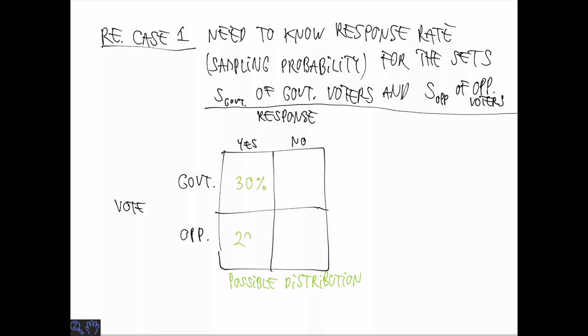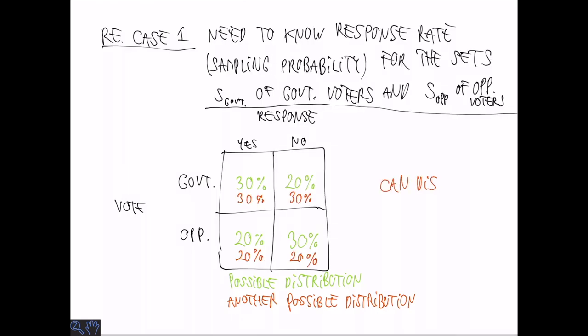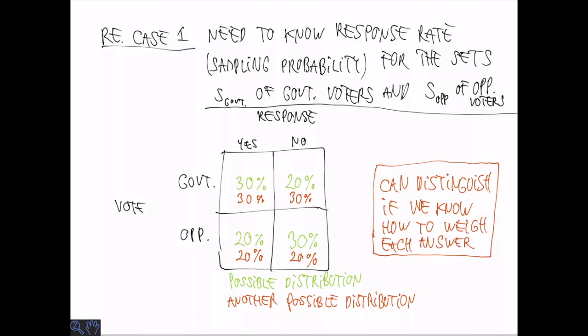There are several different distributions in these four categories that are consistent with the information we have so far. One possible distribution is that both government and opposition voters are 50% but they have different response rates. Another possible distribution is that the two categories actually have the same response rate and hence 60% of the voters are government voters. We can distinguish between these two cases if we know how to weigh the different responses.